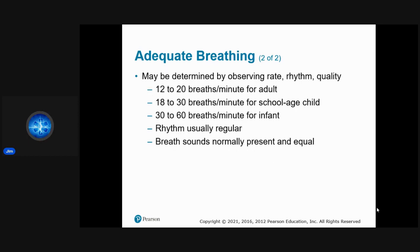We determine adequate breathing by observing rate, rhythm, and quality. Normal rate is 12–20 breaths per minute for adults, 18–30 for school-age children, and 30–60 for infants. Rhythm should be regular, and breath sounds should be normal, present, and equal.